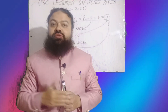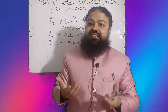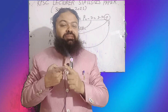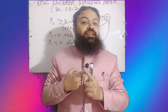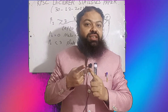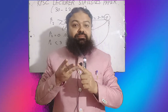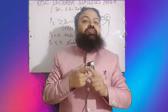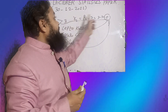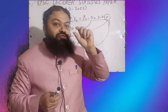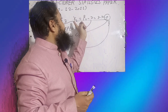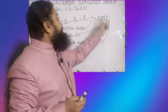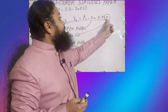In the exam — whether for Lecturer Statistics, Research Officer, Statistician, Statistical Assistant, or Statistical Officer — if beta2 is greater than 3, it is leptokurtic; if beta2 equals 3, it is mesokurtic; if beta2 is less than 3, it is platykurtic. In beta2 we compare with 3. If gamma2 is given, we compare with 0, because gamma2 equals beta2 minus 3. Gamma2 = 0: mesokurtic; gamma2 > 0: leptokurtic; gamma2 < 0: platykurtic.